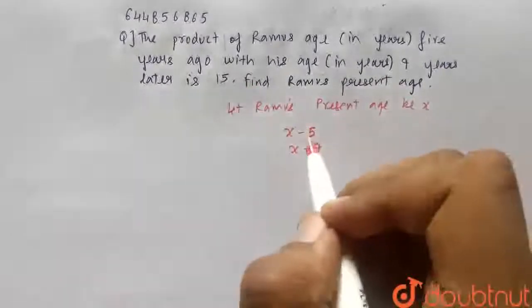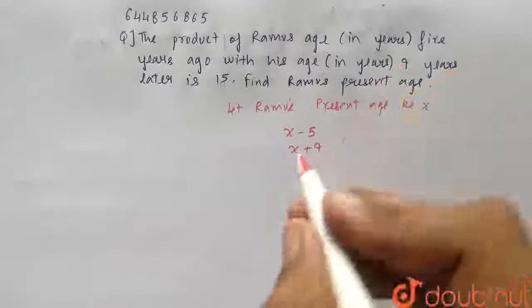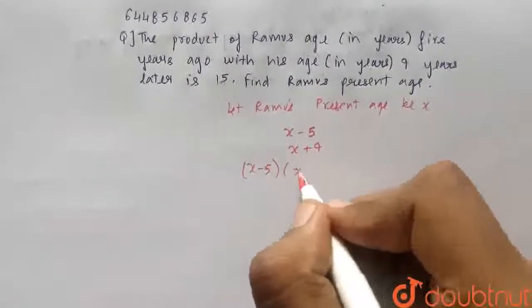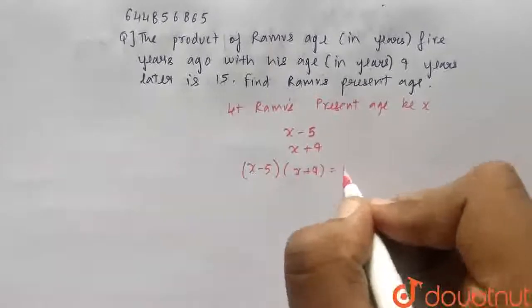We are given that the product of these both is equal to 15. Therefore, x minus 5 into x plus 9 equals 15.